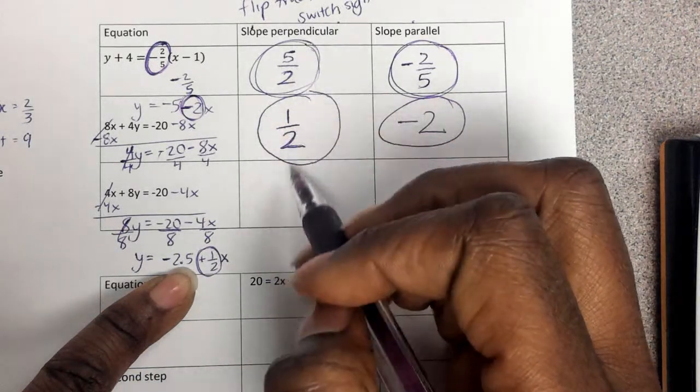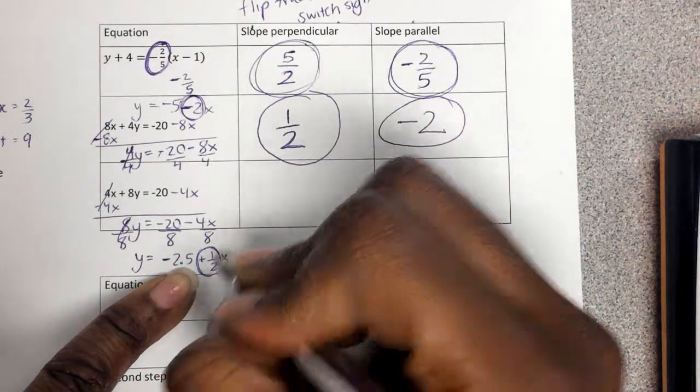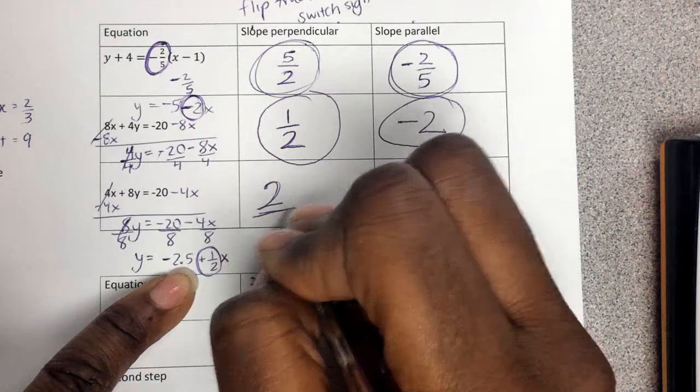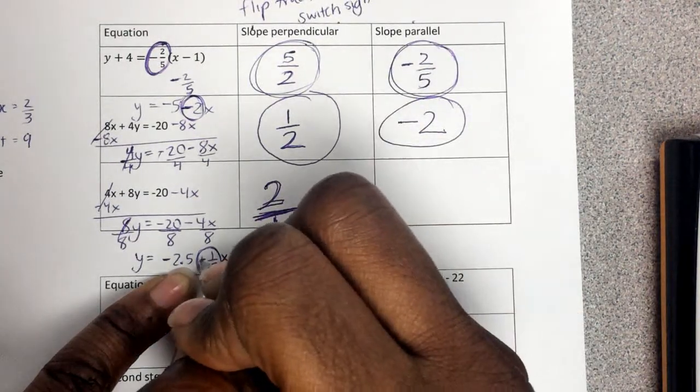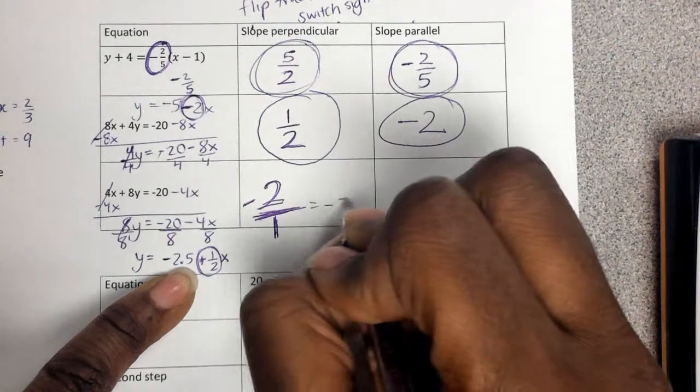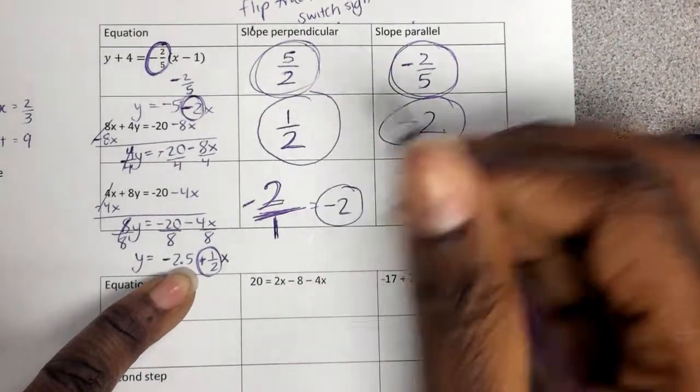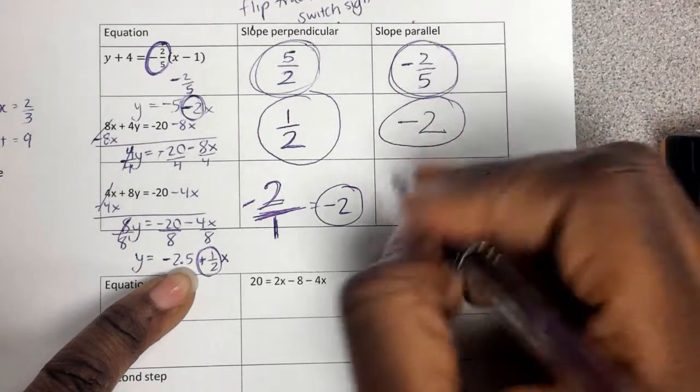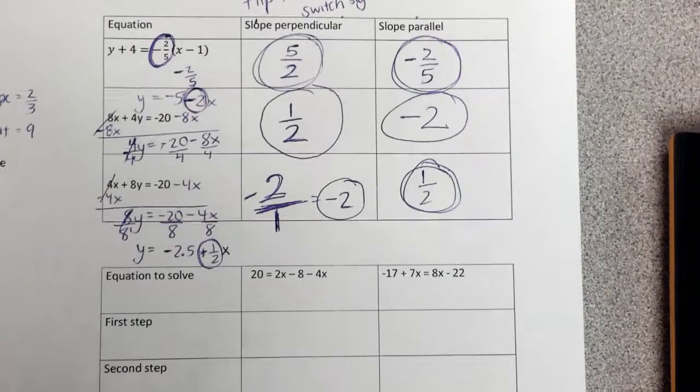But perpendicular, you flip and switch. So flipping a 1 over 2, that gives us a 2 over 1. Then we switch the positive to a negative. So that just is negative 2. Because the one's invisible. And for parallel lines have what? The same slope. If you were in class, you know why I'm saying it like that.